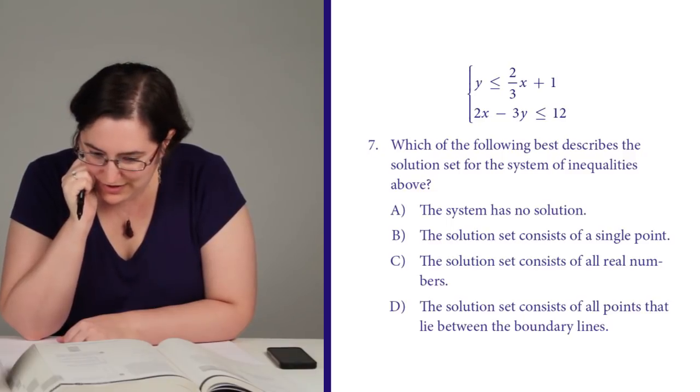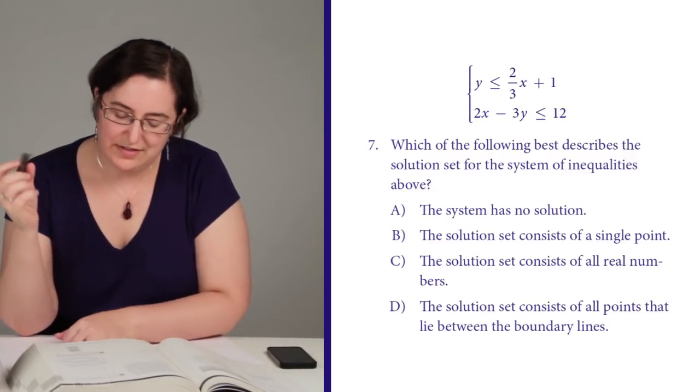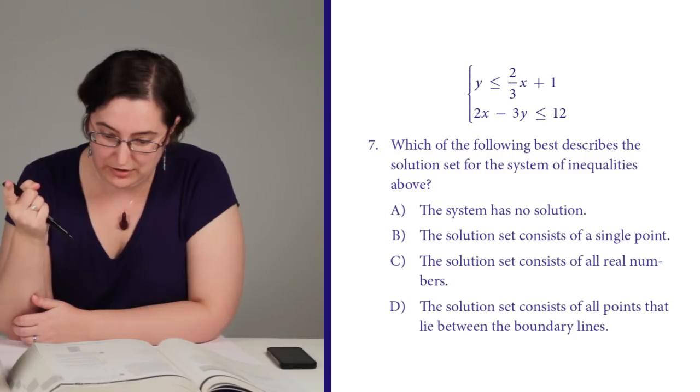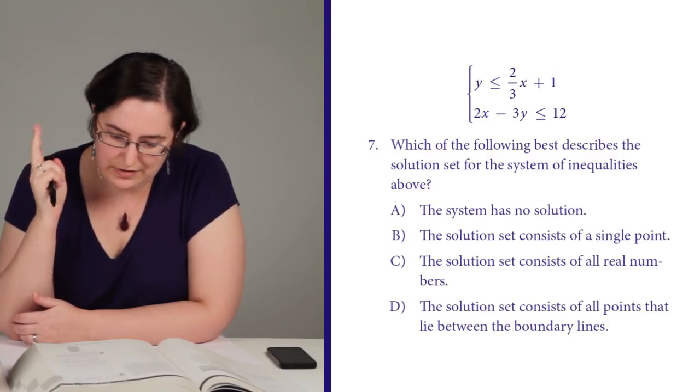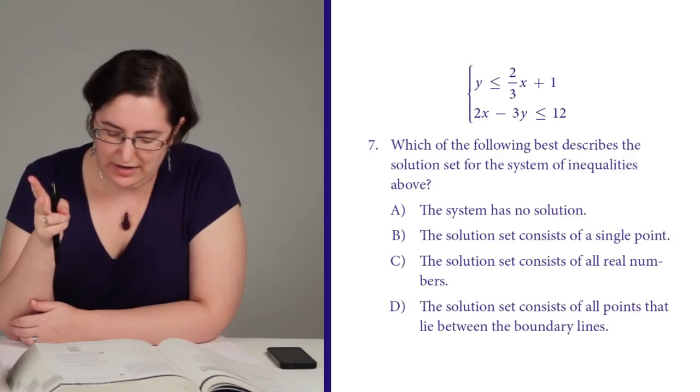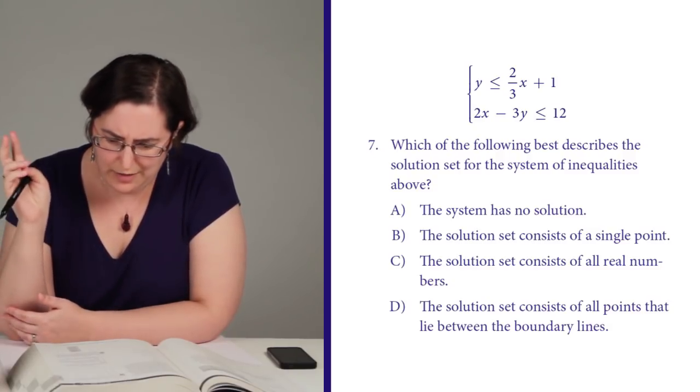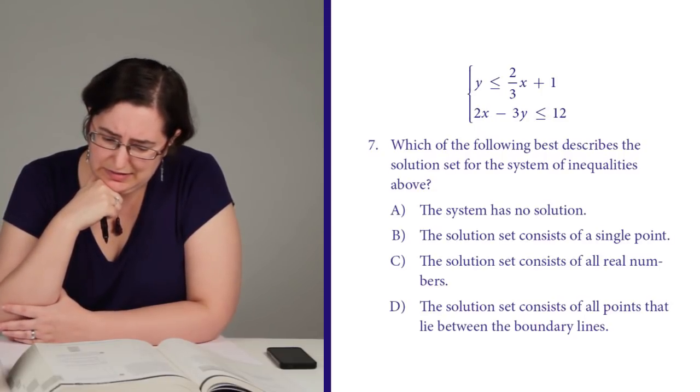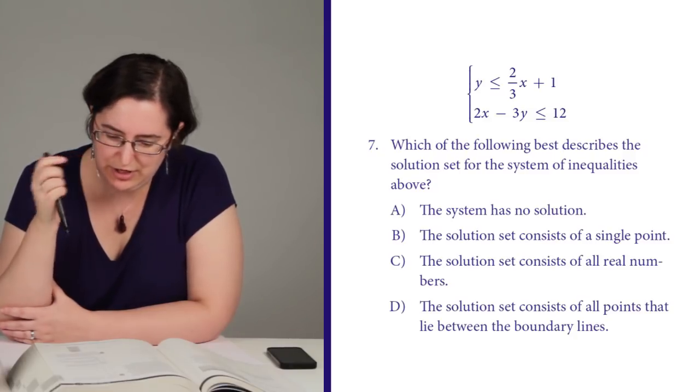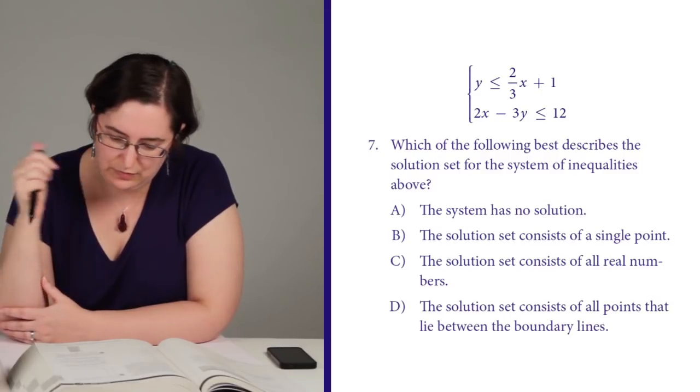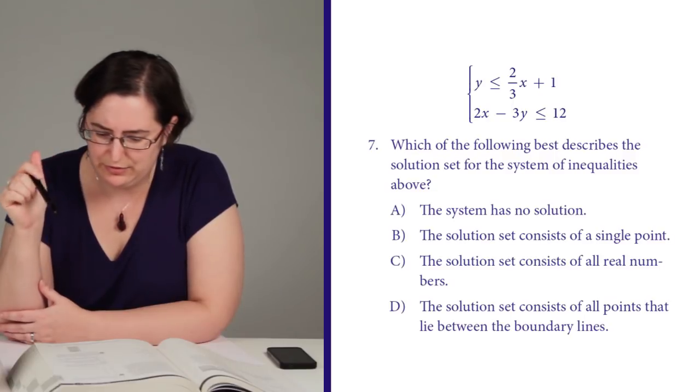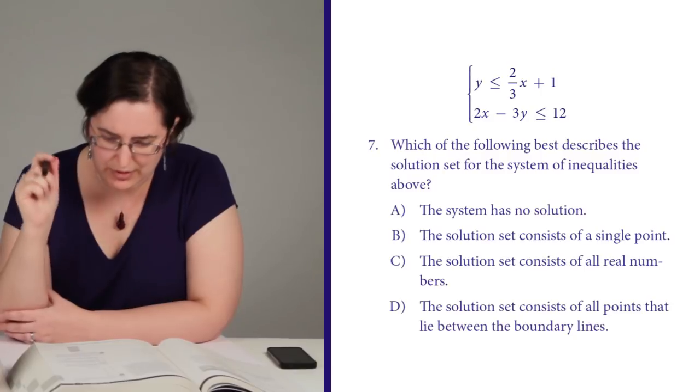So solving for a set of inequalities, and looking at my answer choices, I've got no solution, which is the situation I just saw. A single point, which I don't think I can even have with inequality, so no. All real numbers, which would be if they were basically, no. I was gonna say if they were the same line and they were shaded in the same direction, but then there would be a whole bunch of things that wouldn't be included, so I don't think that's possible either. The solution set all points that lie between the boundary lines. That's possible. So either A or D, let's see what these guys look like once I put them in the same form.